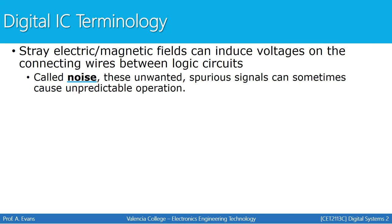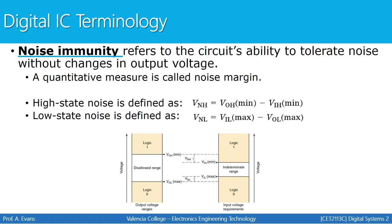Another term we'll discuss for TTL devices is noise. Noise comes from stray electric or magnetic fields in the surrounding area of your circuit, which can induce voltages on the connecting wires between logic circuits. This induced voltage can cause unwanted signals and make your circuit behave in an unpredictable manner. Whenever we design a circuit or system, we try to account for at least some system noise. Noise immunity refers to a circuit's ability to tolerate noise.